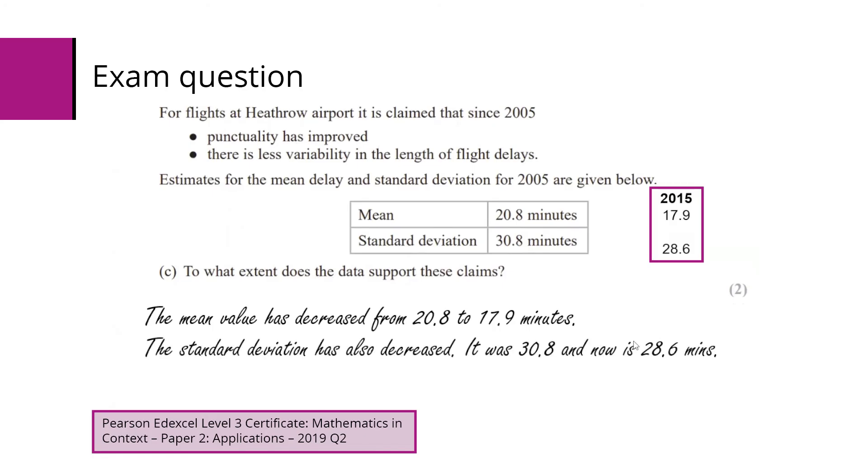What you need to do here is answer the question: does the data support these claims? They're saying punctuality has improved—it has, the mean has decreased—and there's less variability, and that's also true. The standard deviation has gone down, so the data supports both of the claims.